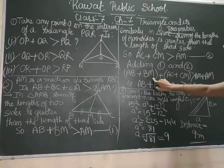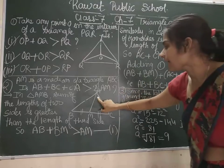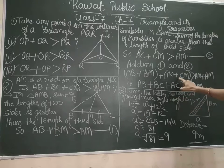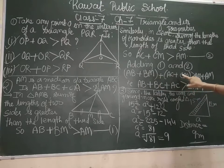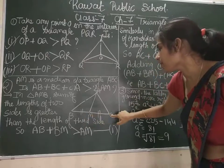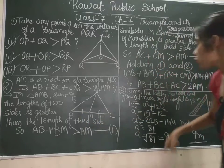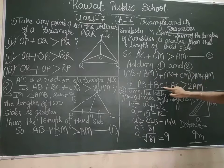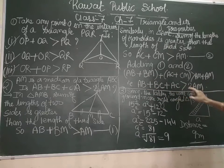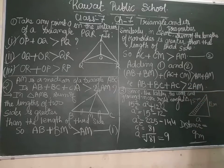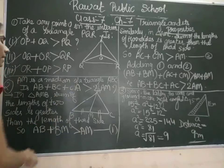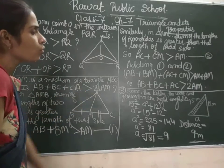So AB plus BM, AC plus CM. BM and CM is what? BM and CM is BC. So we will replace BM and CM by BC. So AB plus BC plus AC is greater than 2AM, which is proved. AB plus BC plus CA is greater than 2AM.